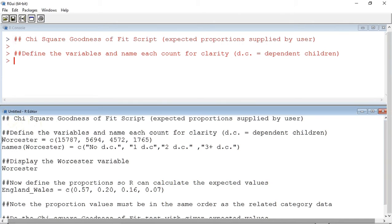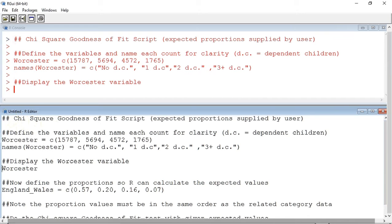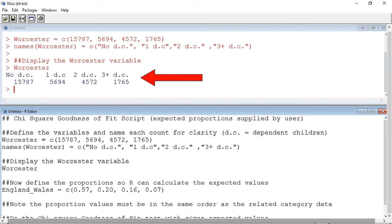First we're going to define the variables using the C operator. In the case of the Worcester variable I'm also going to give each column a name for clarity. We define the Worcester variable. We're defining the names for the Worcester variable. I'm now going to display the Worcester variable so you can see what the names do. You've got all four figures with the names of the categories above it.